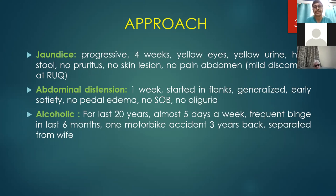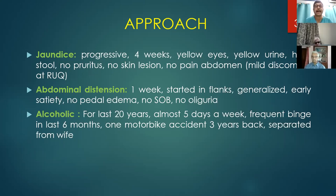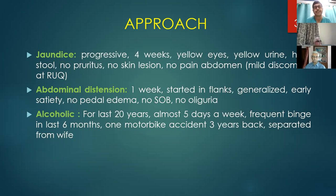Three weeks later he developed slowly progressive abdominal distension starting in the flanks, generalized with early satiety. There was no pedal edema, no shortness of breath, oliguria, or fever in these four weeks. The patient is 39 years old, alcoholic for 20 years, drinking almost five days a week with frequent binges in the last six months. He sustained one episode of road traffic accident three years back and was separated from his wife due to his alcohol intake.